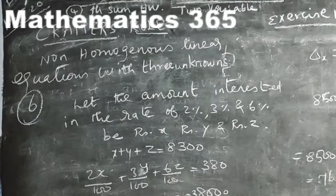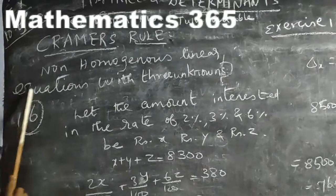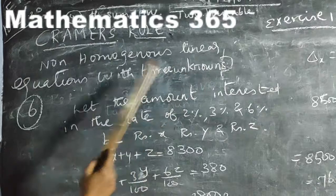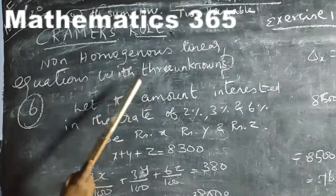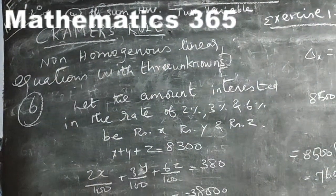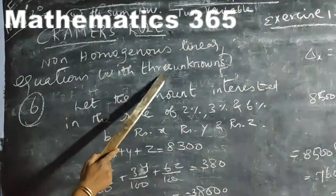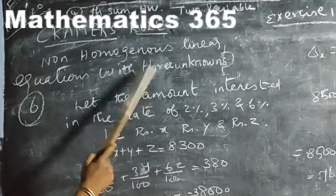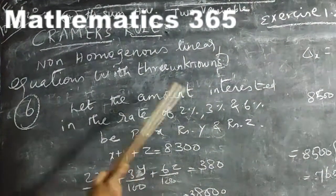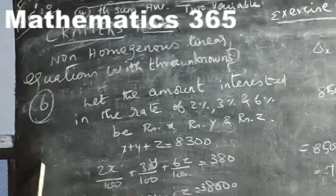Good morning students. Now we are going to non-homogeneous linear equations with 3 unknowns. Up to this we have seen 2 unknowns x and y; now 3 unknowns x, y, z. Non-homogeneous means equal to a number, linear power.